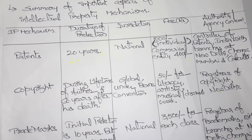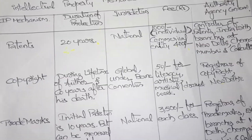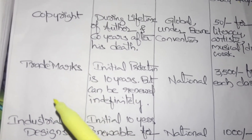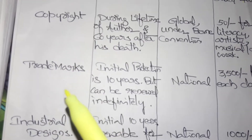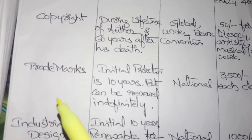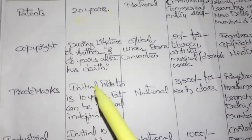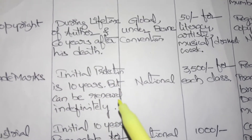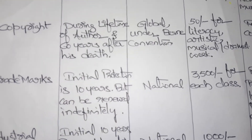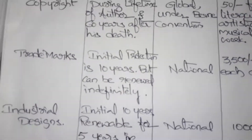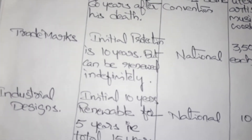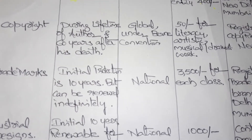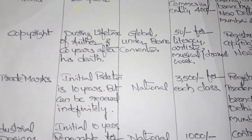A trademark is a symbol, word, logo, or slogan. The initial protection period for a trademark is 10 years, but it can be renewed indefinitely — meaning you can renew the trademark for your lifetime.